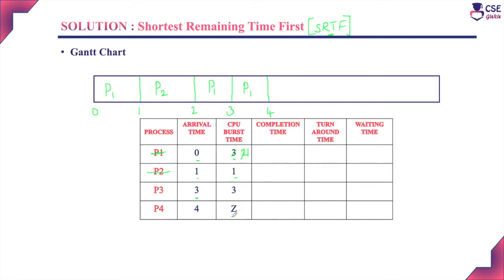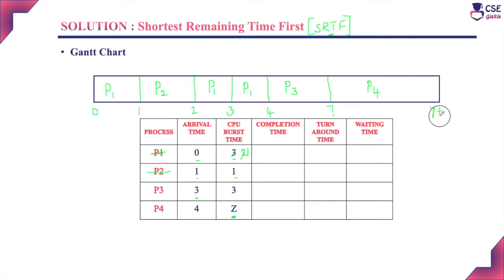At time four milliseconds, processes P3 and P4 are both available in the ready queue. Since we don't know the burst time of process P4, we will first consider Case 1: process P3 executes first. Process P3 executes for three milliseconds, completing at time seven milliseconds. Then process P4 is assigned to the CPU with burst time Z, so its completion time is 7 plus Z.